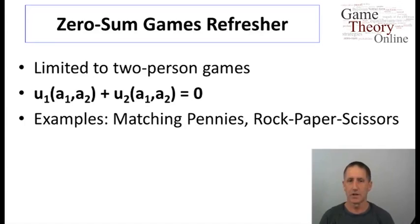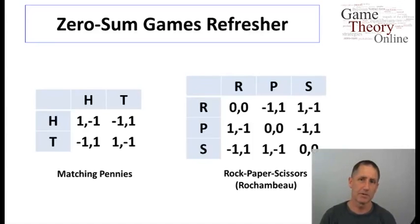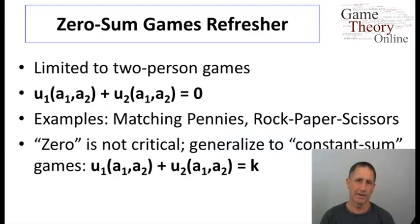We've seen the two canonical examples: Matching Pennies and Rock, Paper, Scissors. And we also said that, in fact, zero is not particularly privileged, that any constant would do, and perhaps a more proper name would be constant-sum games.